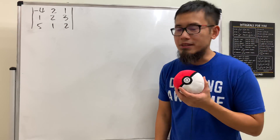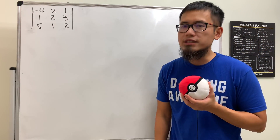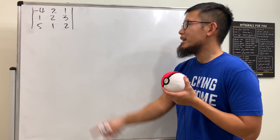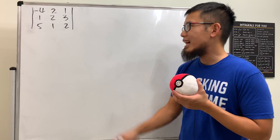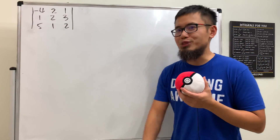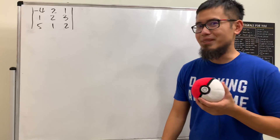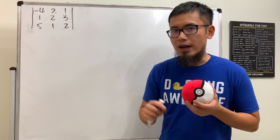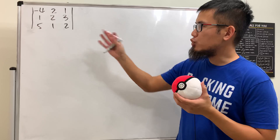Hello, Living Algebra. Today let's find the determinant of a three by three matrix, and I'll show you three ways to do it. This right here is an example, and notice that this matrix has no zero entries, so we are doing this legitimately. Anyway, the first way is of course the cofactor expansion.